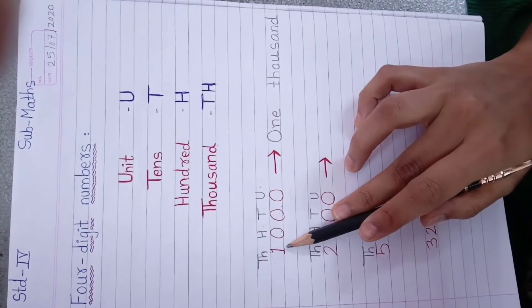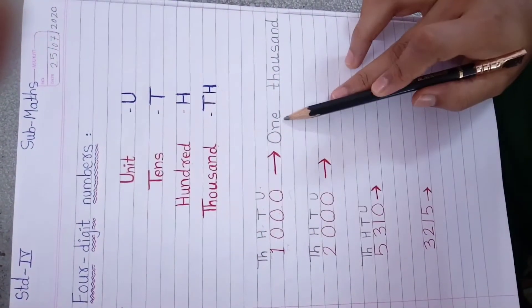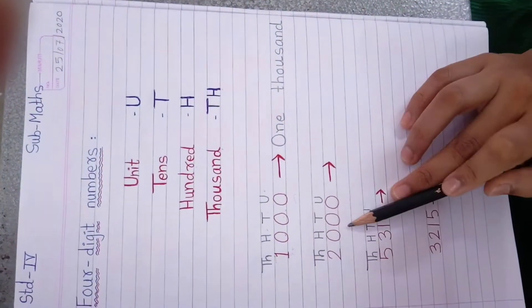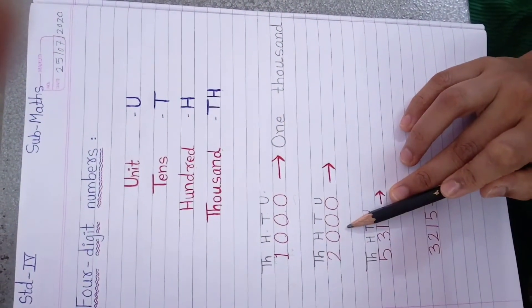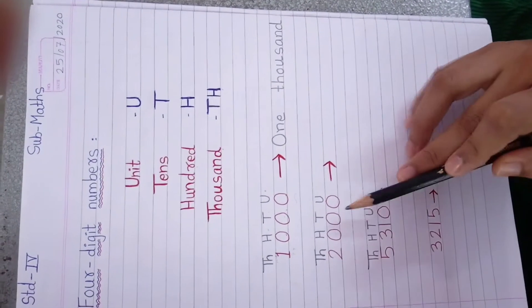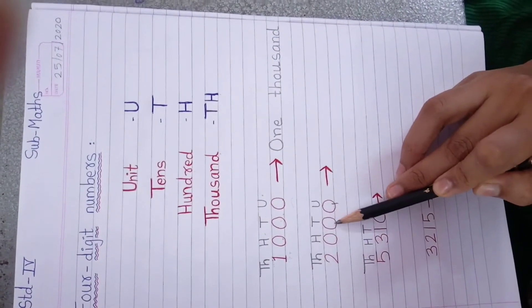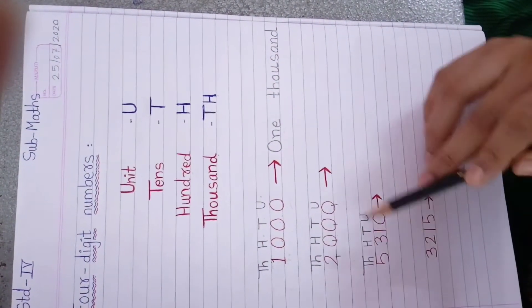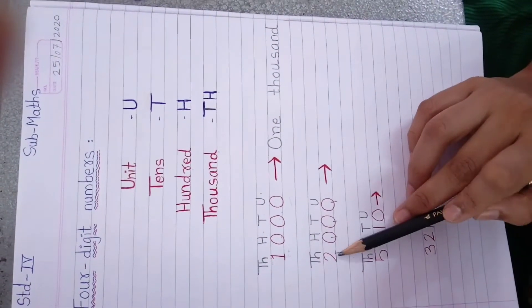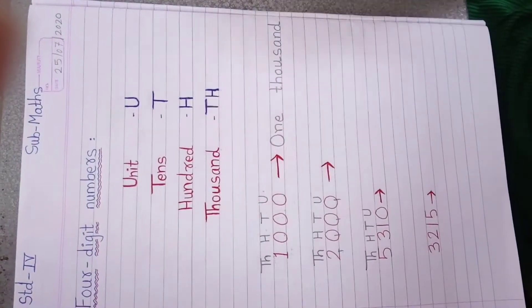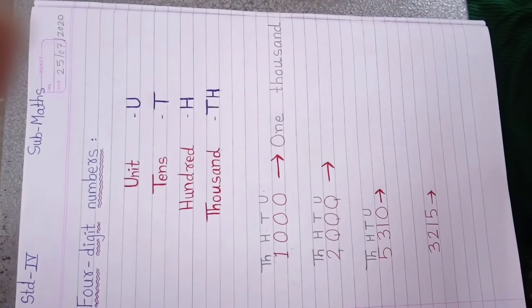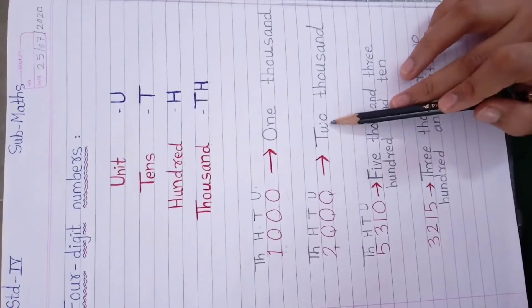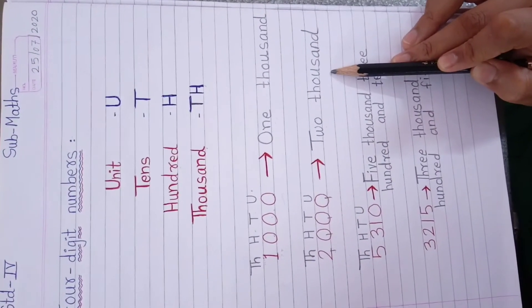So how will we read 1000? See here — 1000. Now see the next number. Here also how many digits? 1, 2, 3 and 4 — 4 digits. So how will we read 2000? We read it as two thousand.